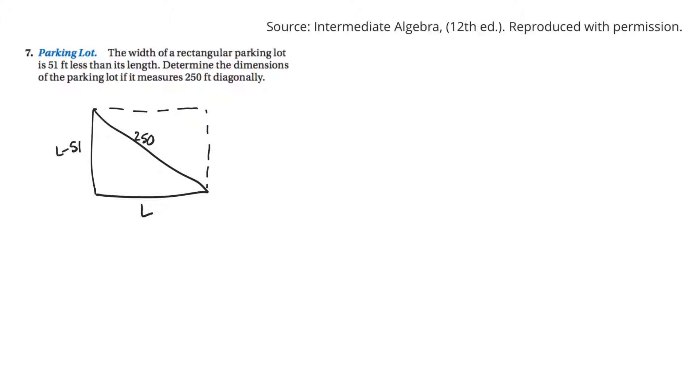All right, here's a question from section 7.3 where you need to find the width and length of a rectangular parking lot. They say the diagonal is 250 feet, and that the width is 51 less than its length. So those are the dimensions.